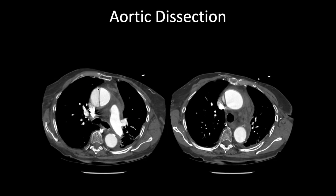This is a case of aortic dissection. This is your ascending aorta and descending aorta, with the sternum and vertebral body for orientation. Within the ascending aorta, you can see this flap — this is an intimal flap in this patient with an aortic dissection. The dissection only involves the ascending aorta and does not involve the descending aorta. This is a Stanford type A aortic dissection.